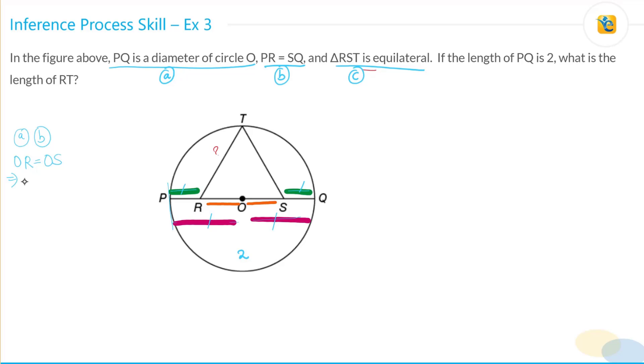Now, what does this mean? That O is midpoint of RS. That's your first inference. That O is the midpoint of RS. Now, let's bring in the information about the triangle RST being an equilateral triangle.